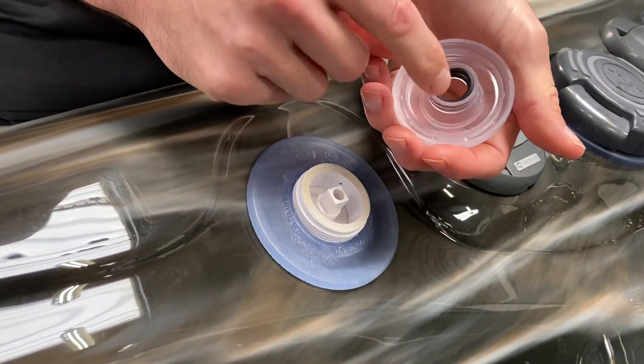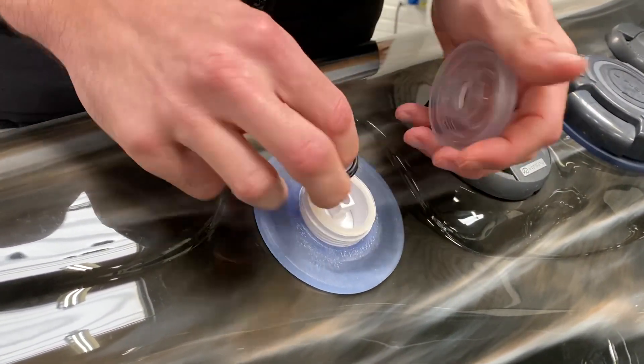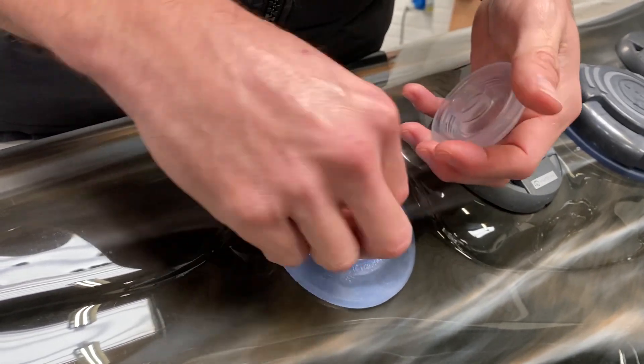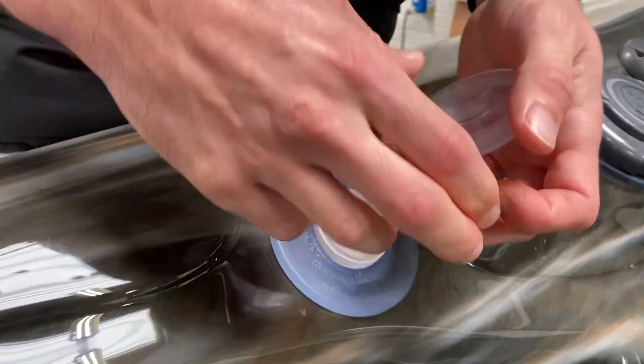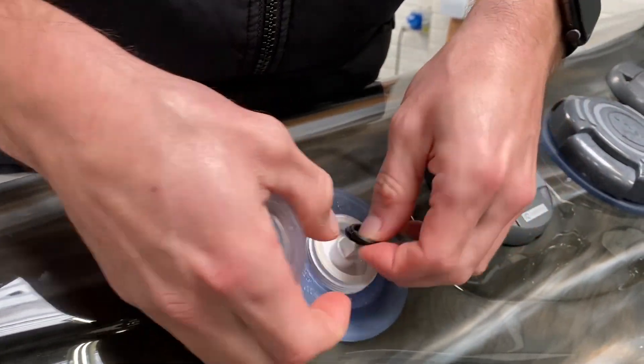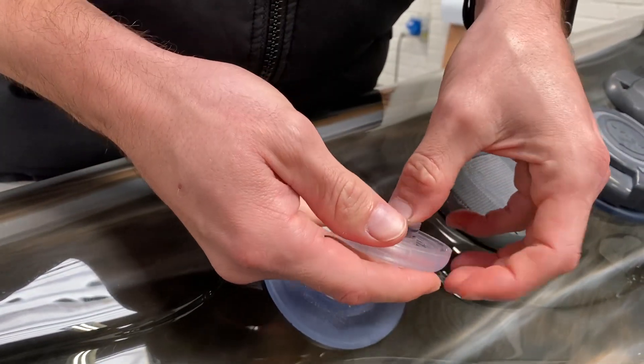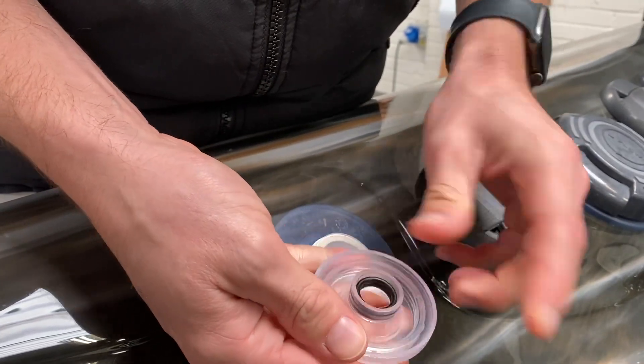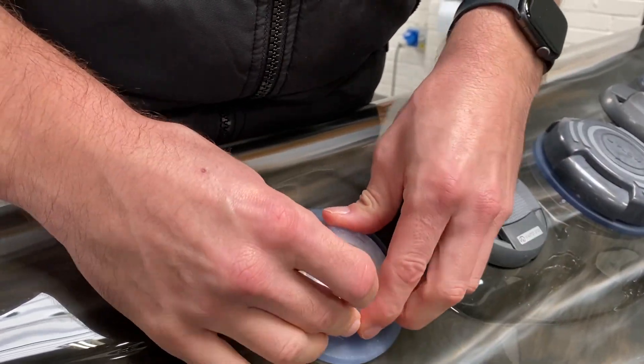Now there's a couple of O-rings that sit inside this piece. Sometimes you might find them on there, so we do just want to take those off, make sure they're sitting inside the housing like that, and then just place it over the top.